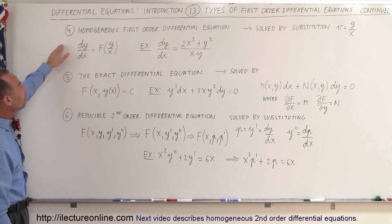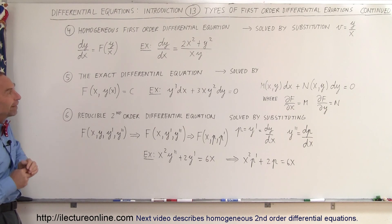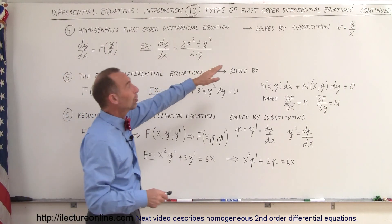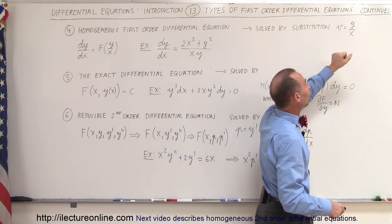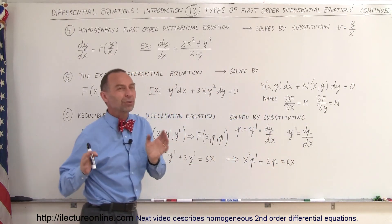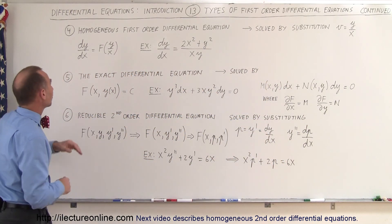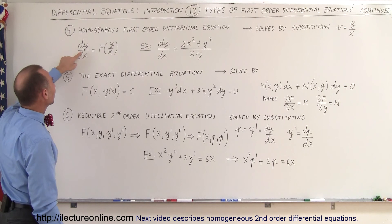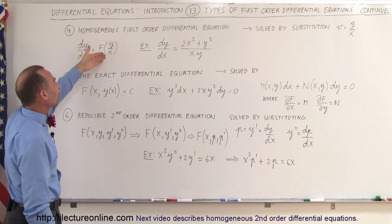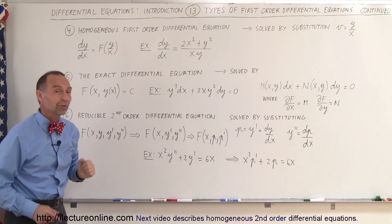So here we have what we call a homogeneous first-order differential equation. And how do we solve it? We substitute it by saying v equals y over x. And of course it needs to be a particular type of differential equation. We have to have the dy/dx equal to some function in the form of y over x. And here's an example.